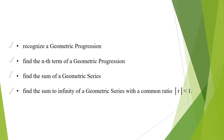We will focus only on the following. One, we will recognize a geometric progression. Two, we find the nth term of a geometric progression. Third, we find the sum of a geometric series. And last but not the least, we find the sum to infinity of a geometric series with a common ratio where the absolute value of r is less than 1.